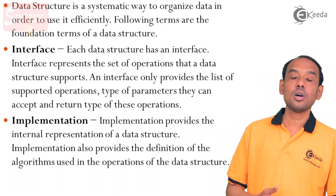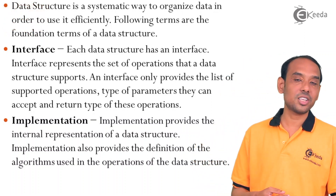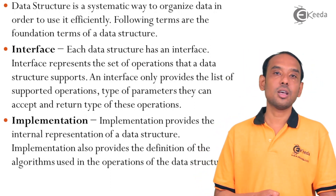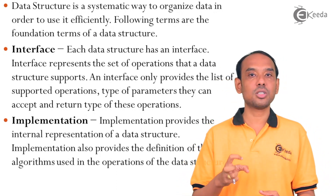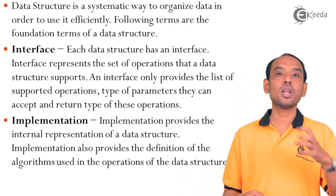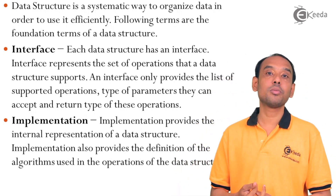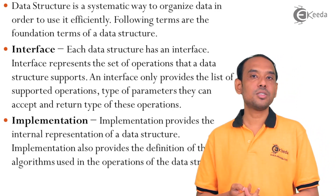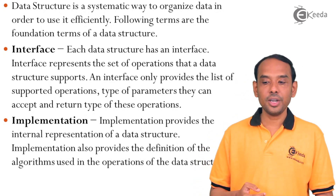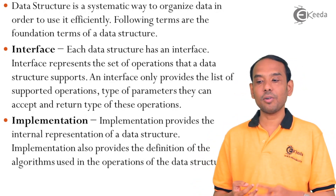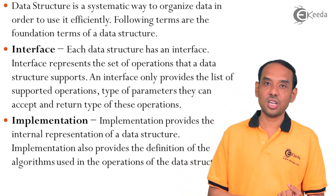While learning data structure, we need to go through the basic terms. The first basic term is the interface. Each data structure has its own interface. Interface represents the set of operations that can be performed on a particular data structure — it provides a list of operations, the type of parameters you pass to the functions, and also defines the return type of these operations.